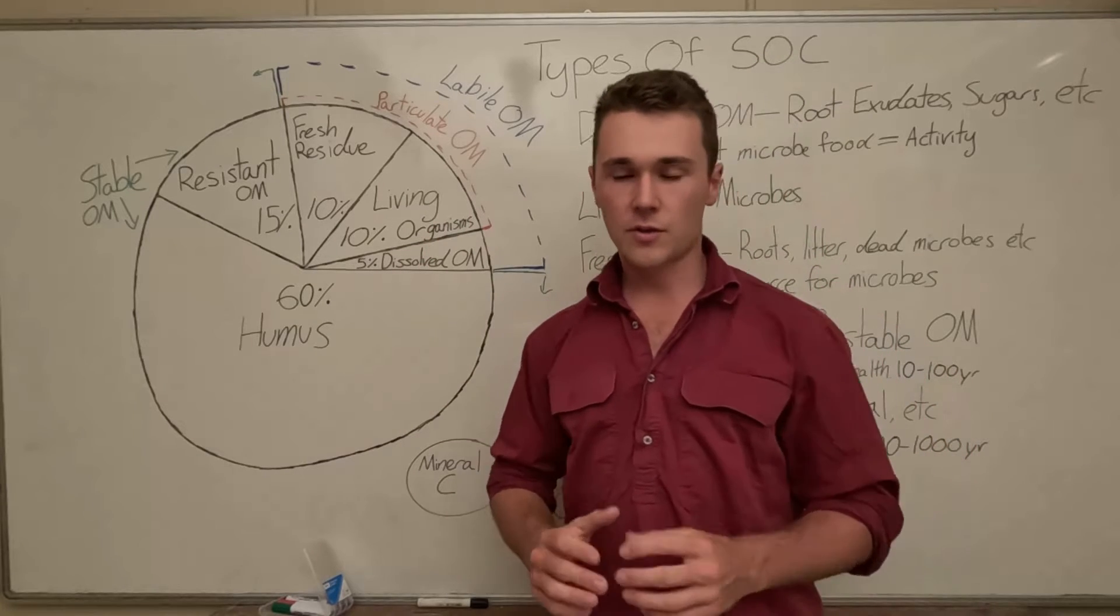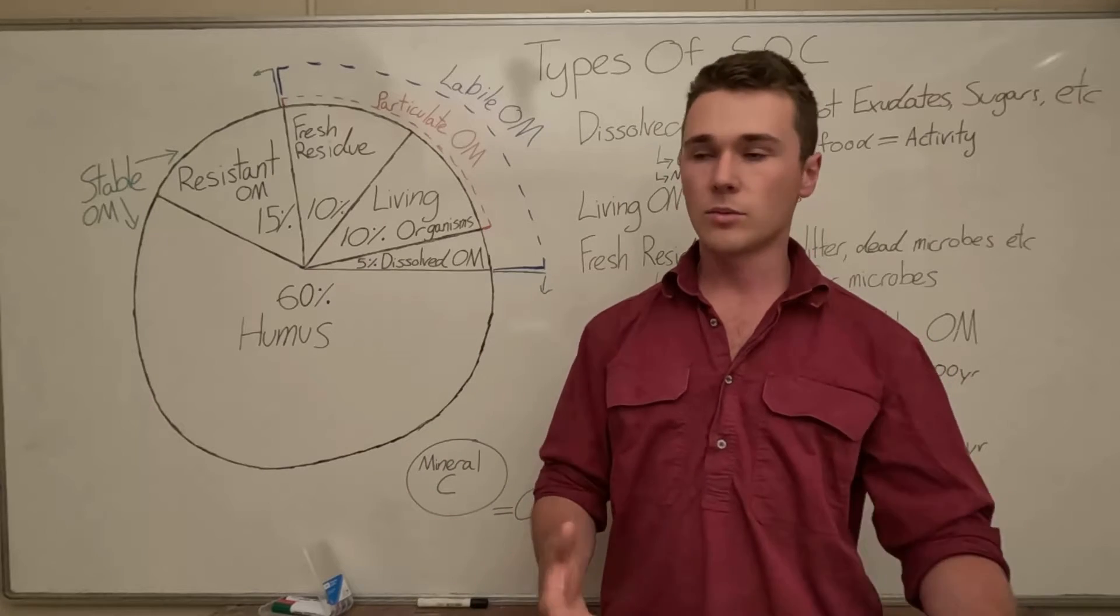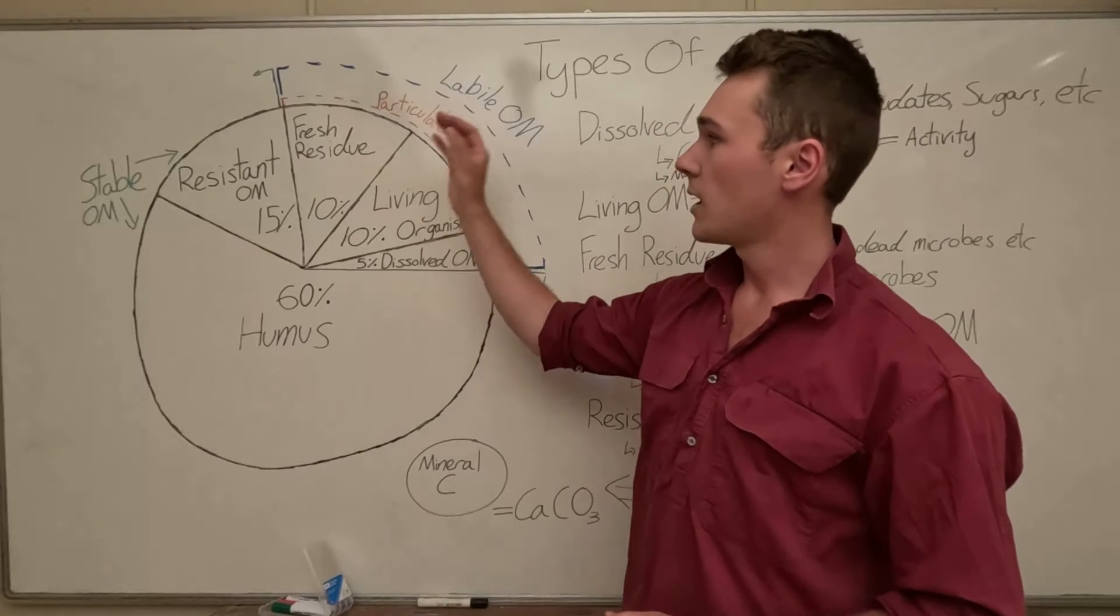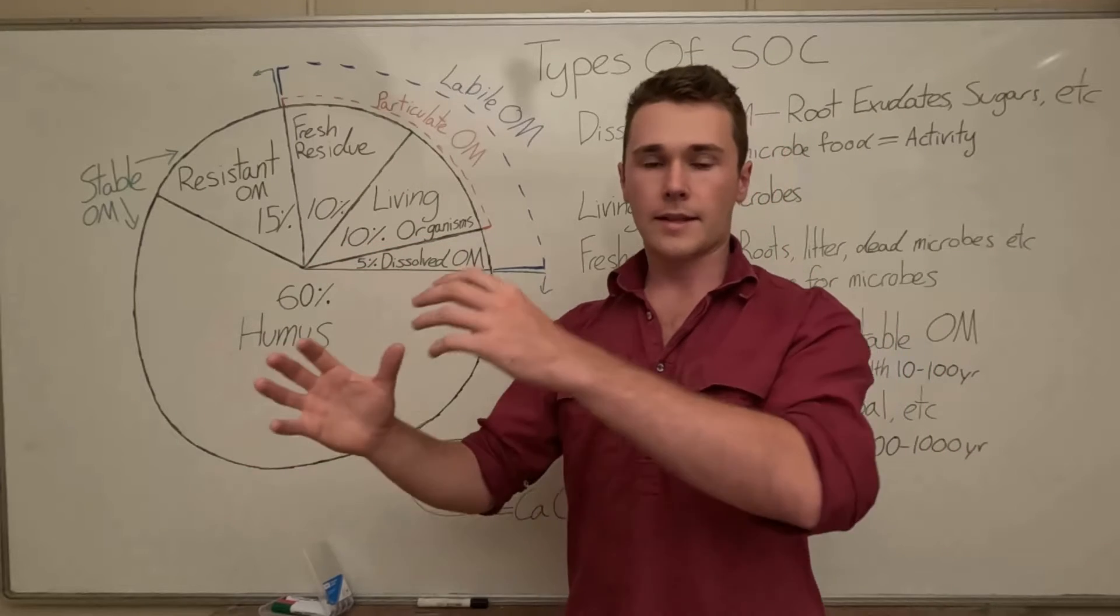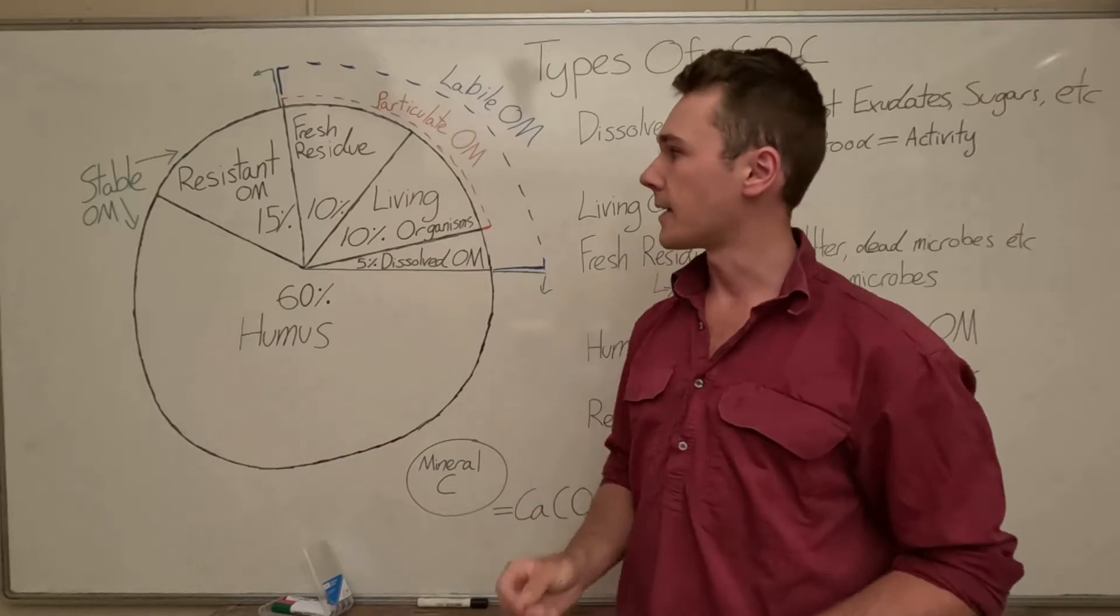Next we have fresh residue so this is things like decomposed plant, animal material, it can be like roots, litter, manure, anything that was once living and it's broken down into little parts.